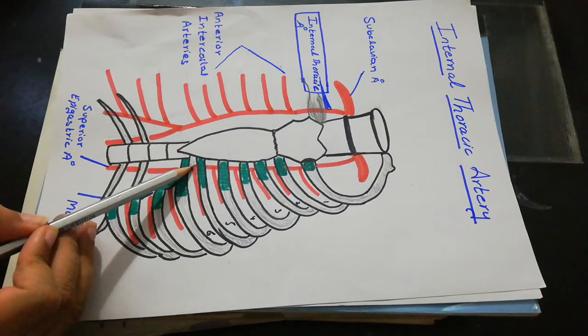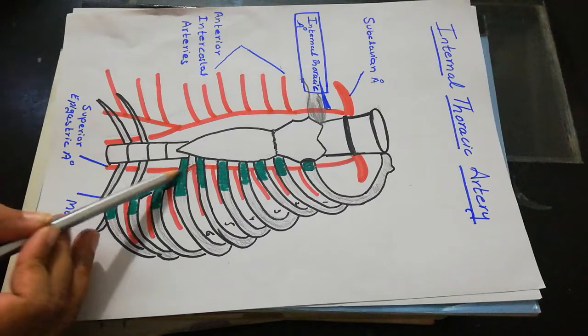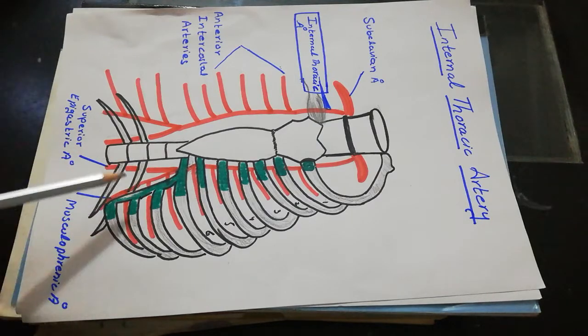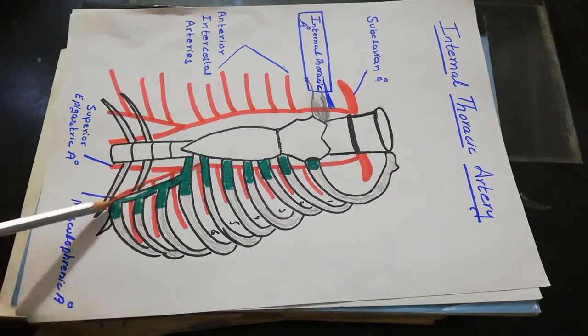At the 6th intercostal space, the internal thoracic artery divides into 2 terminal branches: the 1st branch is the superior epigastric artery, and the 2nd branch is the musculophrenic artery.